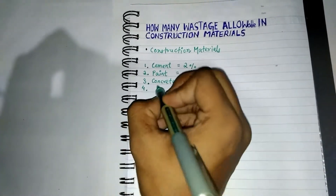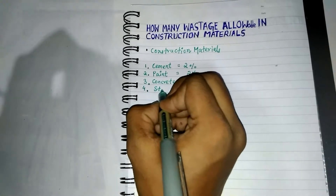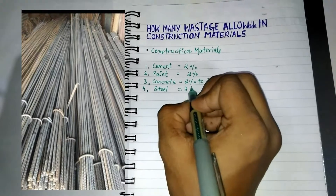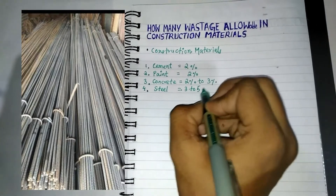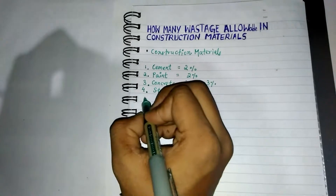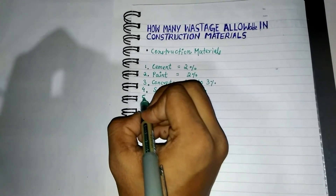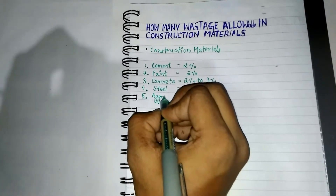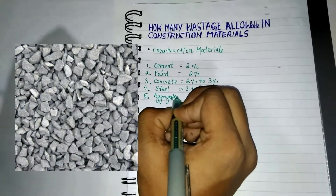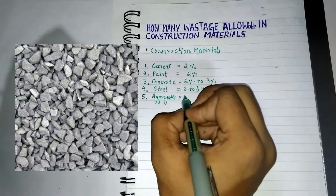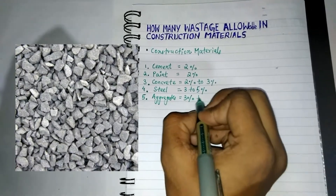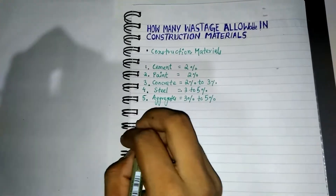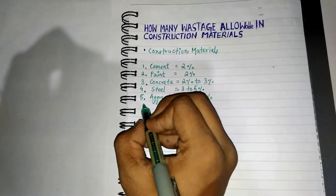Number four: Steel — three to five percent. Number five: Aggregates — three to five percent allowable wastage.